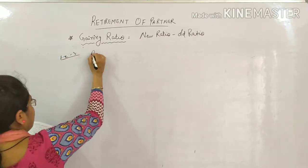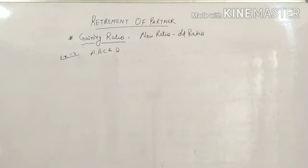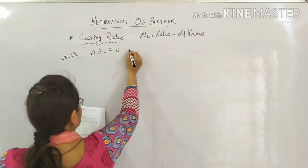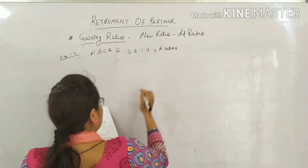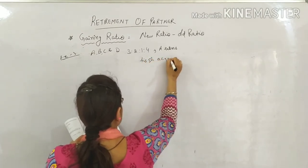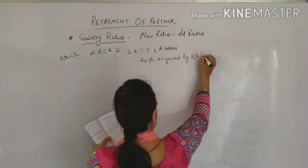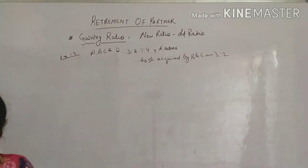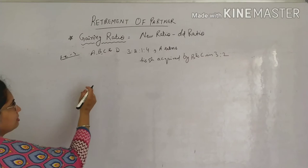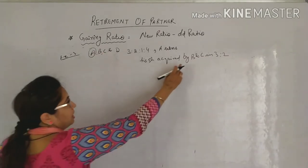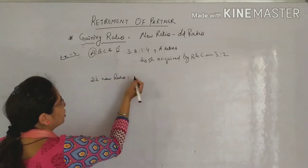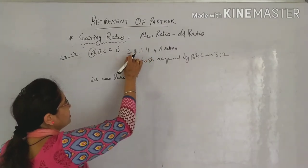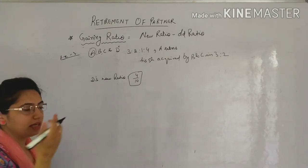Let's take example number 3. A, B, C and D were partners having profit sharing ratio 3 is to 2 is to 1 is to 4, and A retires from the firm. A's retirement happens and his share is acquired by B and C in 3 is to 2 ratio. Their share is acquired in this ratio. So it's simple: our A retires, B and C are taking it, meaning D's share won't change at all. So you can write: D's new ratio, you already know what it will be - 4, plus 1, 5, 6, 7, 7 plus this. Their ratio is confirmed, this is fixed - it was this much earlier, it's this much today.